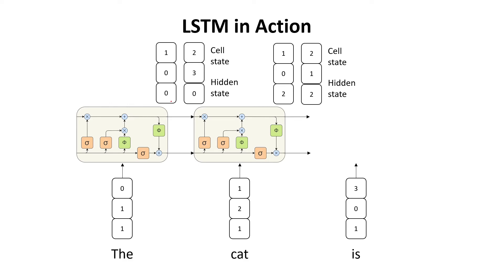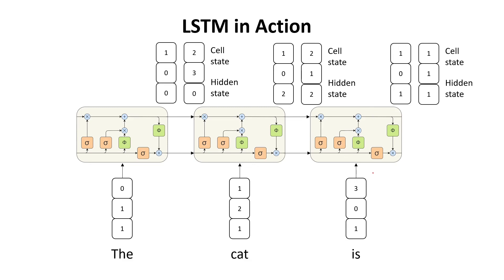We do that again for the third step — transfer the cell state and the hidden state, use the embedding, process both of them, and produce a new cell state and a new hidden state. As in the recurrent neural network case, we can use the hidden states produced by the Long Short-Term Memory cells for various NLP tasks like named entity recognition. We can also use the cell state, though in practice I haven't seen it used as much as an input to a neural network on top of the LSTM cells.